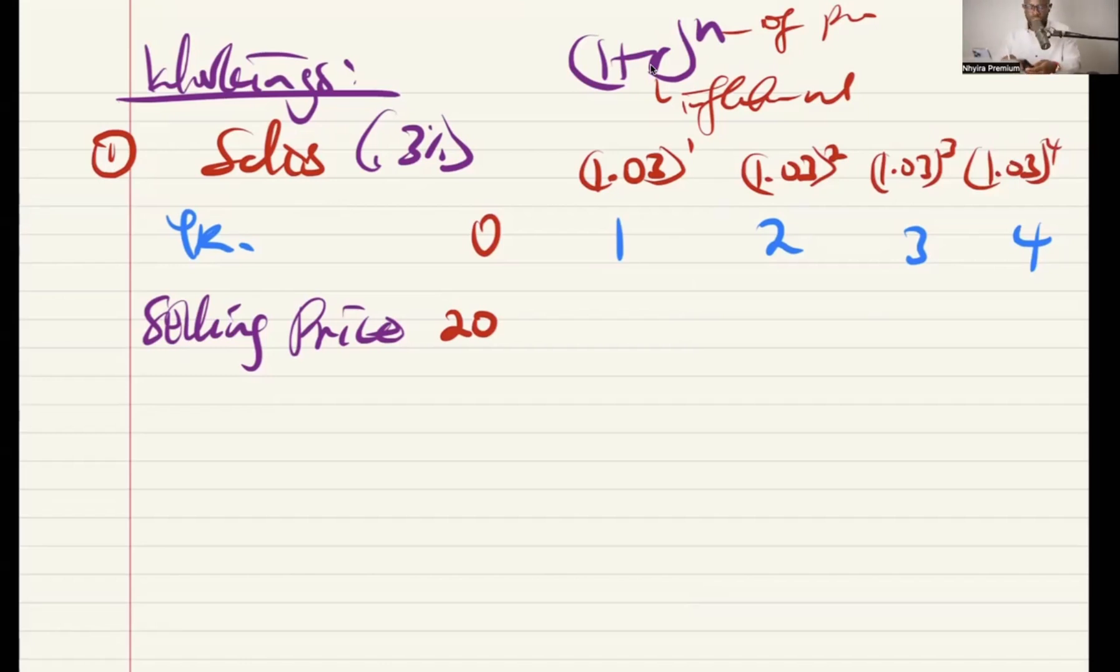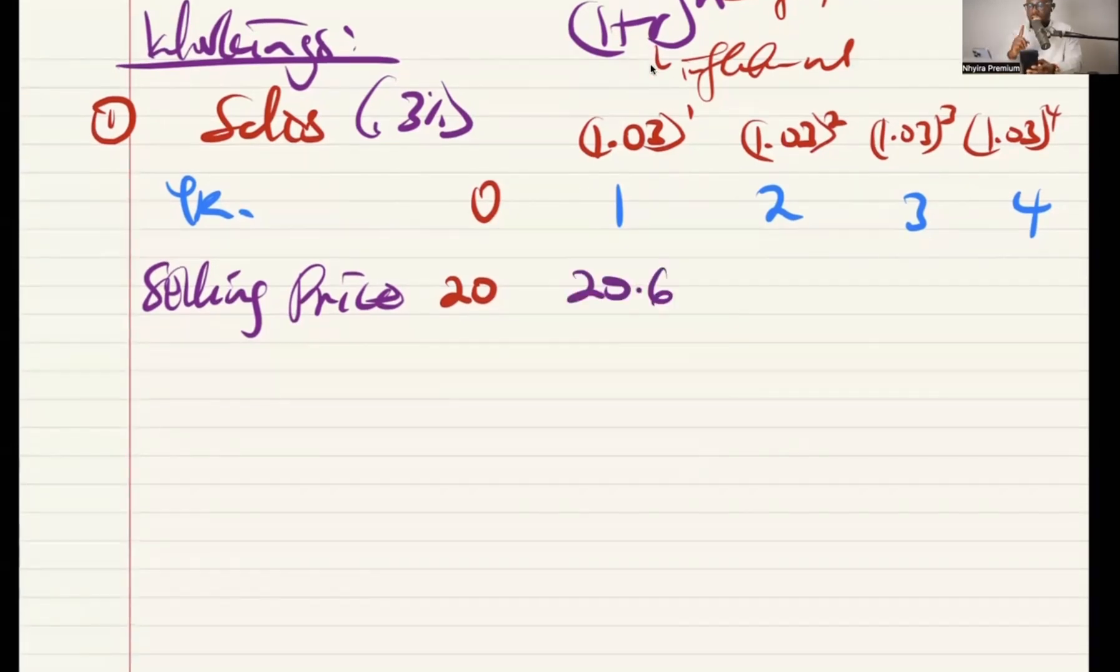So to get the inflated price, we have to multiply the 20 by 1 plus R exponent N. N is the number of period, the period in question. R is the inflation rate. So here, it will be 1.03 exponent 1, 1.03 exponent 2, 1.03 exponent 3, 1.03 exponent 4. That is how we get the selling prices for the respective years. Alternatively, so let's punch the first one, for instance. So 20.6. I could just multiply that by the rate, which is 1.03 to get the next one. That's 21.22. Multiply it again by 1.03. That's 21.85. You want to work to two decimal places here. Then multiply it again by 1.03. And that is 22.51. So that's how we get the inflated price.